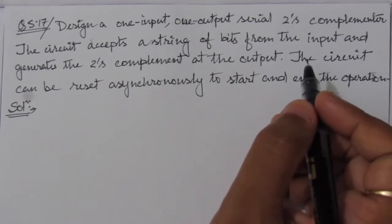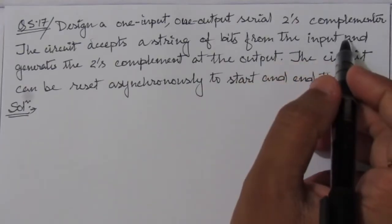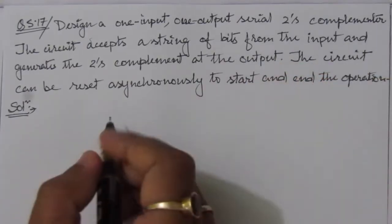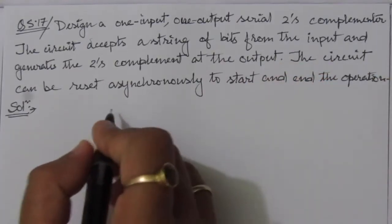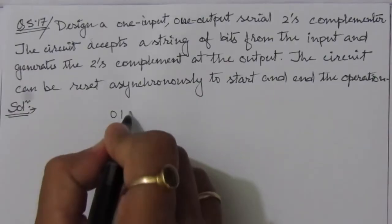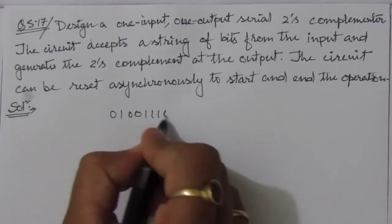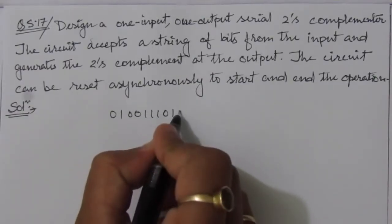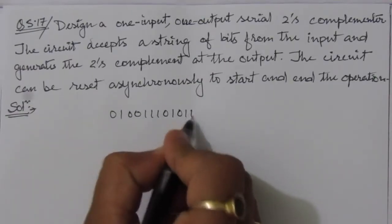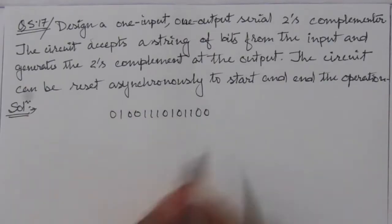Let us first understand how a two's complementer works. Suppose we have a number: 0 1 0 0 1 1 1 0 1 0 1 1 0 0. Suppose this is the number.